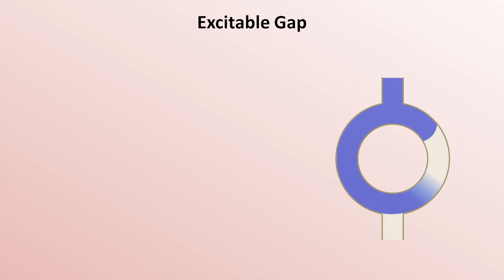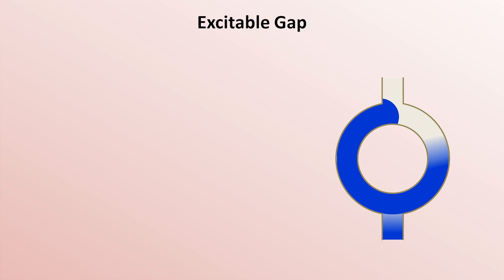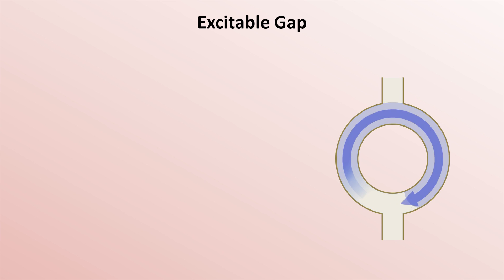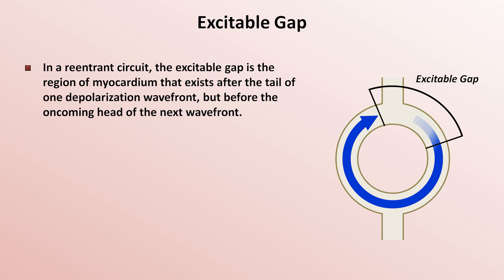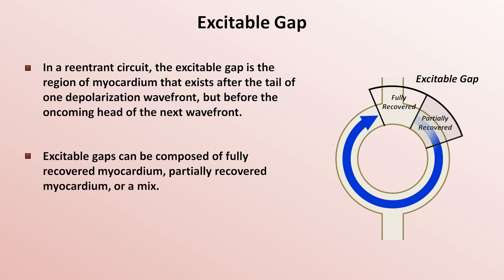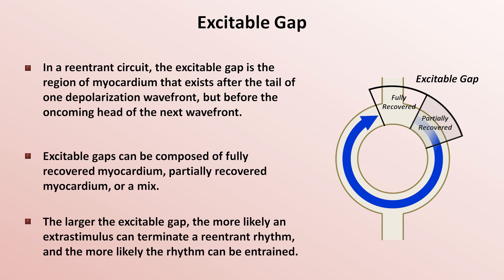Next, I'll discuss the excitable gap. In a reentrant circuit, there is a wavefront of depolarization traveling around in a circle, sort of chasing its tail, firing off antegrade impulses in one direction and retrograde impulses in another with each cycle. The excitable gap is the region of myocardium that exists after the tail of one depolarization wavefront but before the oncoming head of the next wavefront. Excitable gaps can be composed of fully recovered myocardium, partially recovered myocardium, or a mixture of both. The larger the excitable gap, the more likely an extra stimulus can terminate a reentrant rhythm, and the more likely the rhythm can be entrained.